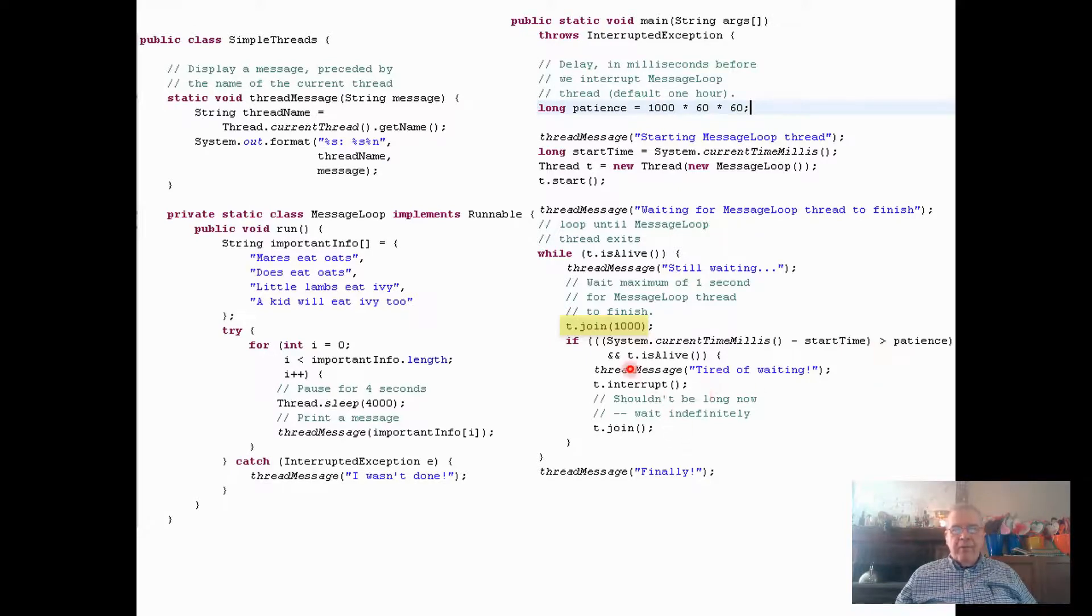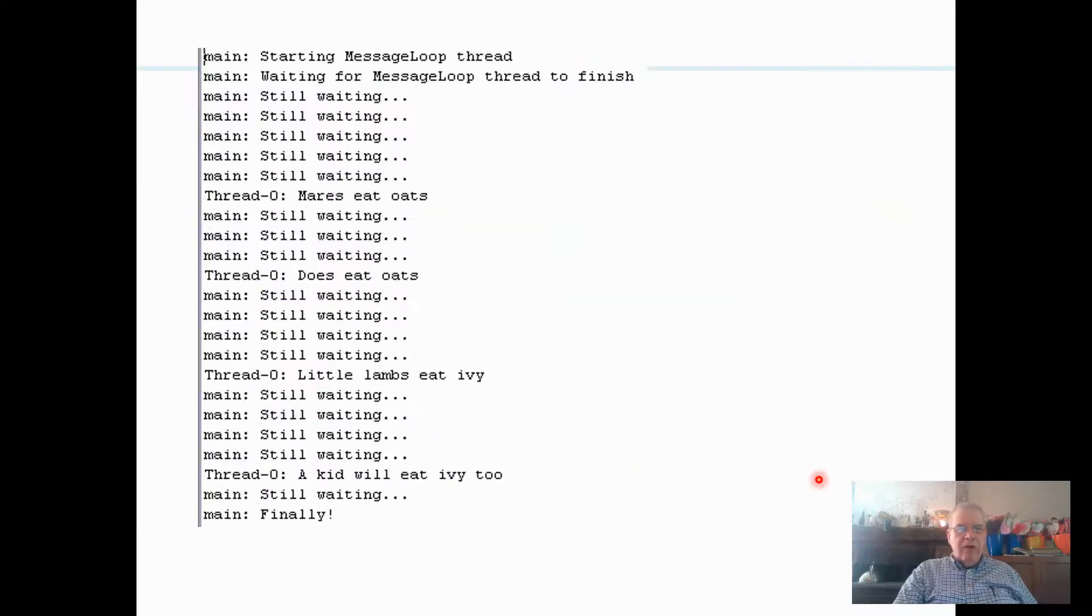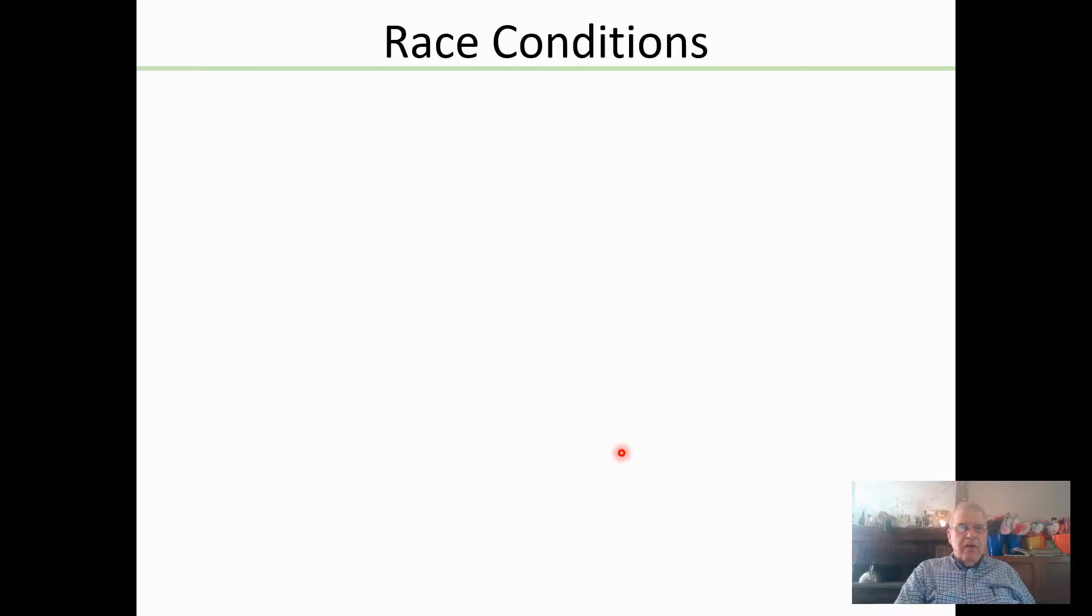Let's see how that works. We're waiting, still waiting. Notice there are five here, although it's four seconds, then there's mares eat oats and three calls to thread message. Then the second line does eat oats, and that's four lines, and little lambs eat ivy and kiddle eat ivy too. We're finally done. That's how join works.